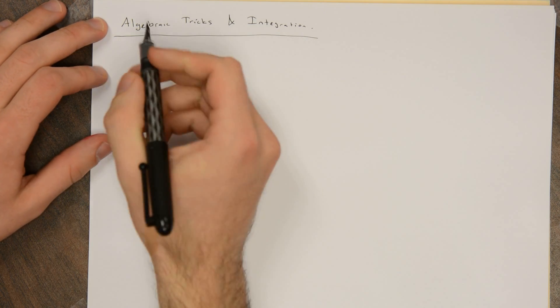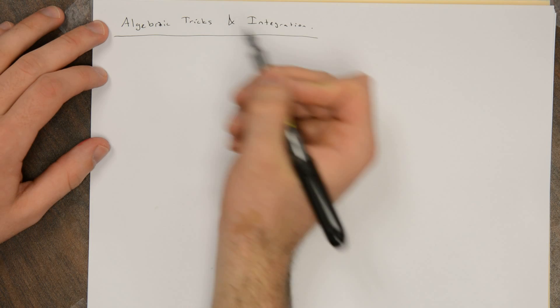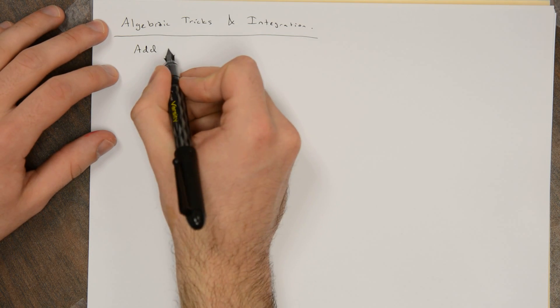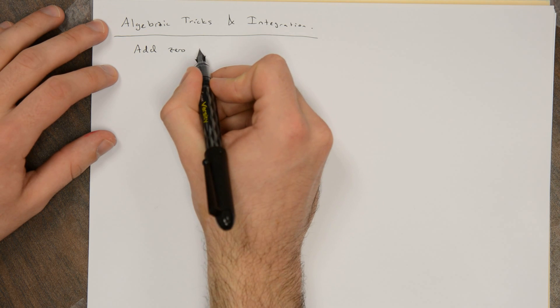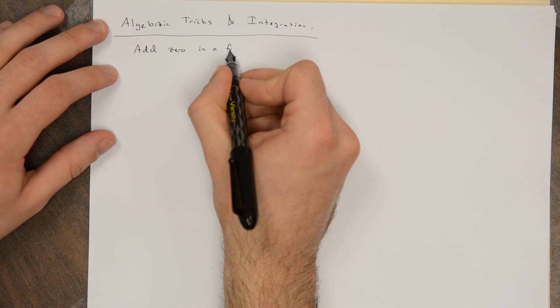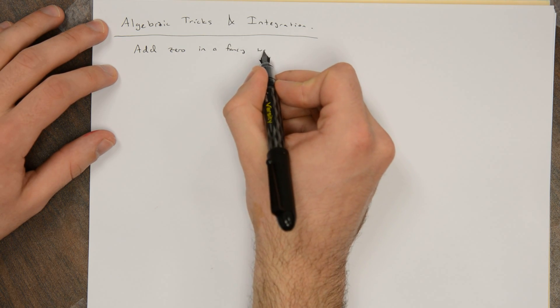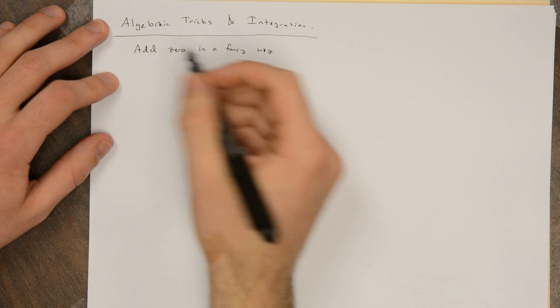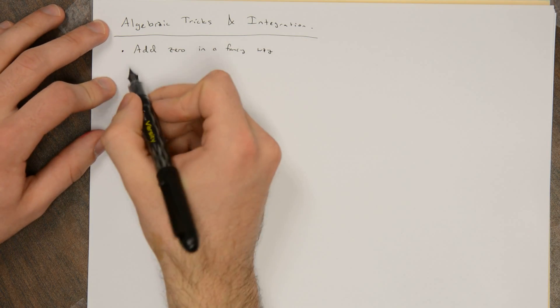Two really fancy things that mathematicians do a lot to prove things is to add zero in a fancy way. Adding zero to something doesn't change it, but if you add zero by adding and subtracting the right thing, it can sometimes make good things happen. So adding zero in a fancy way is a very useful trick.